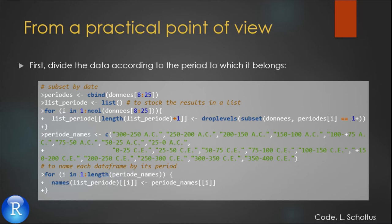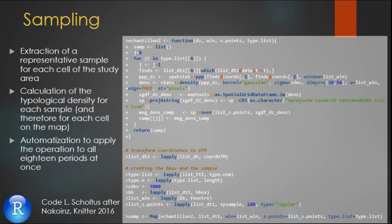I will now quickly introduce you to the manipulation performed on the data under R before presenting you with the first results. The first step is to divide the data into 18 data frames, which correspond to 18 chronological periods taken into account in the study. Each data frame contains the data belonging to the designated period. The second step is to take the samples and calculate the typological density for each of them. At first, the data has to be specialized and its extent to be determined as a study area.